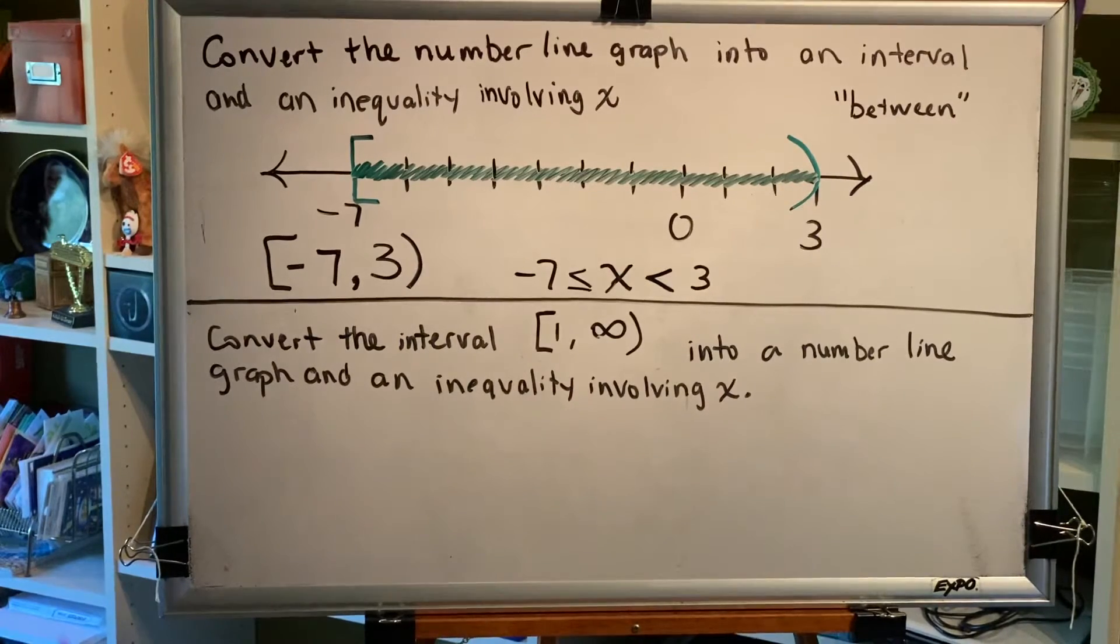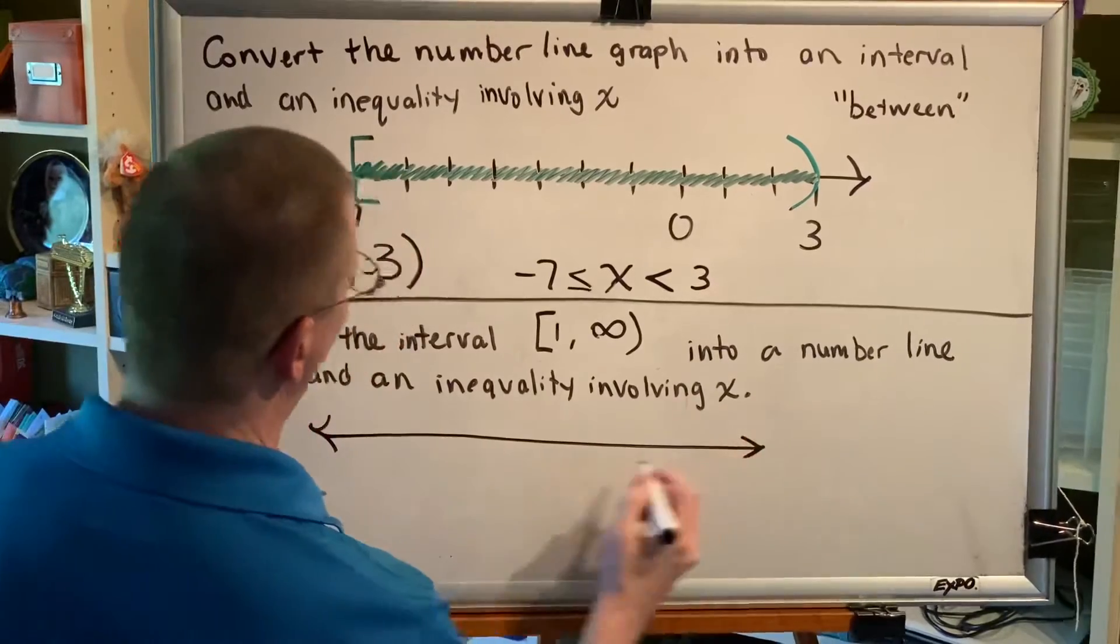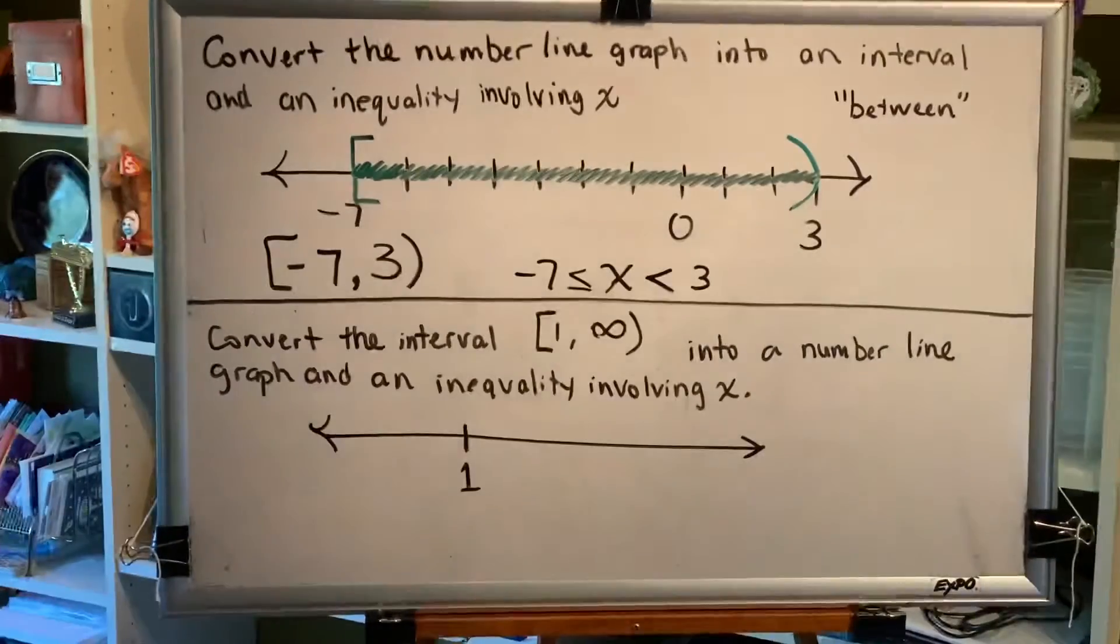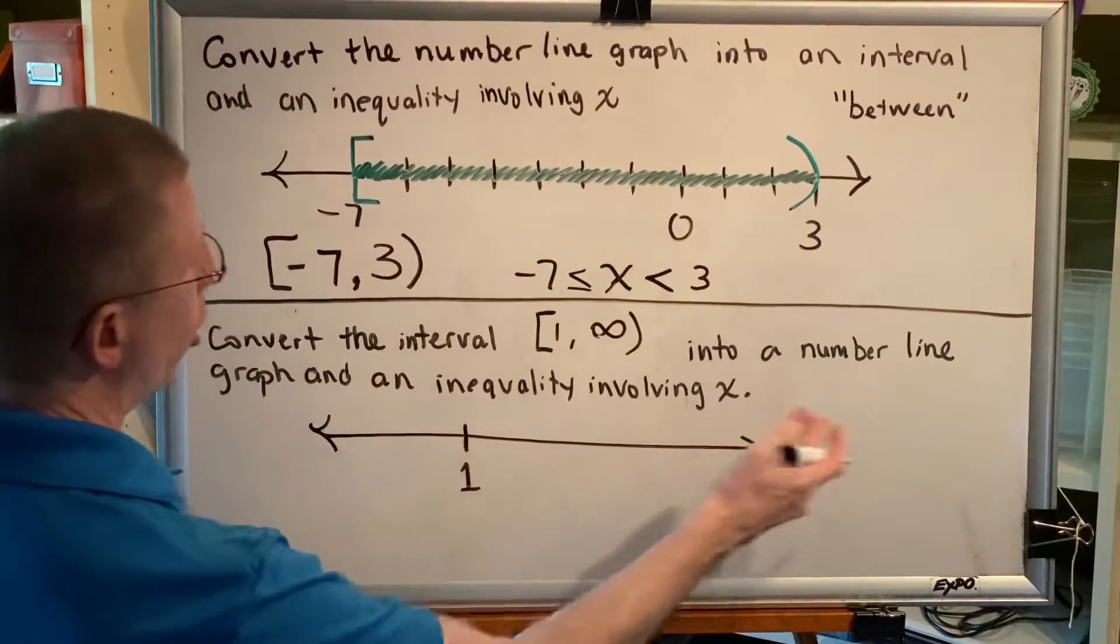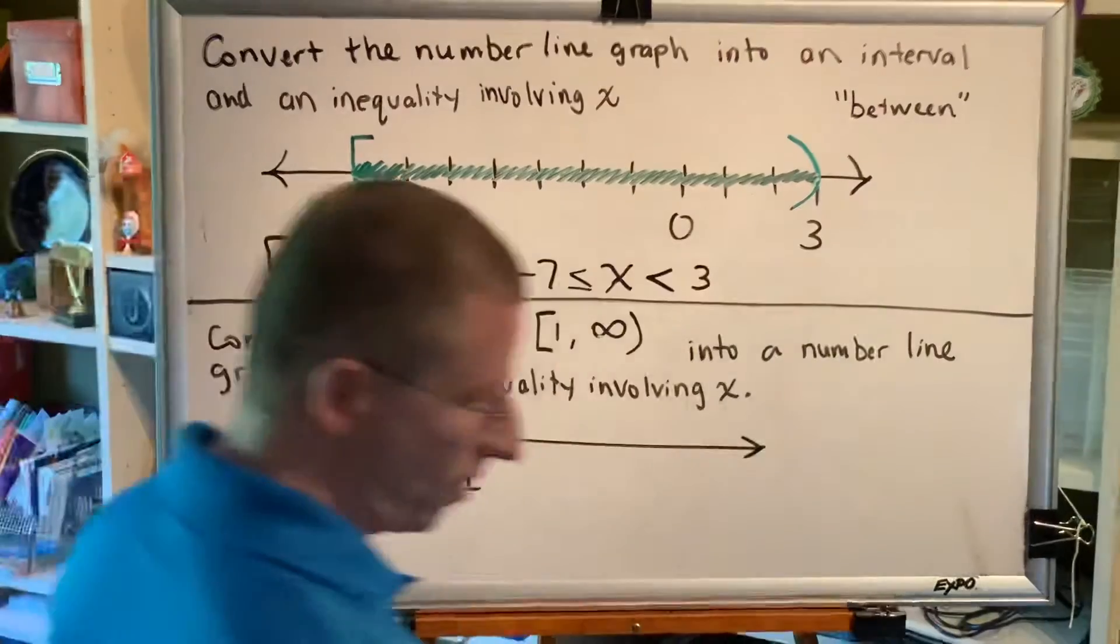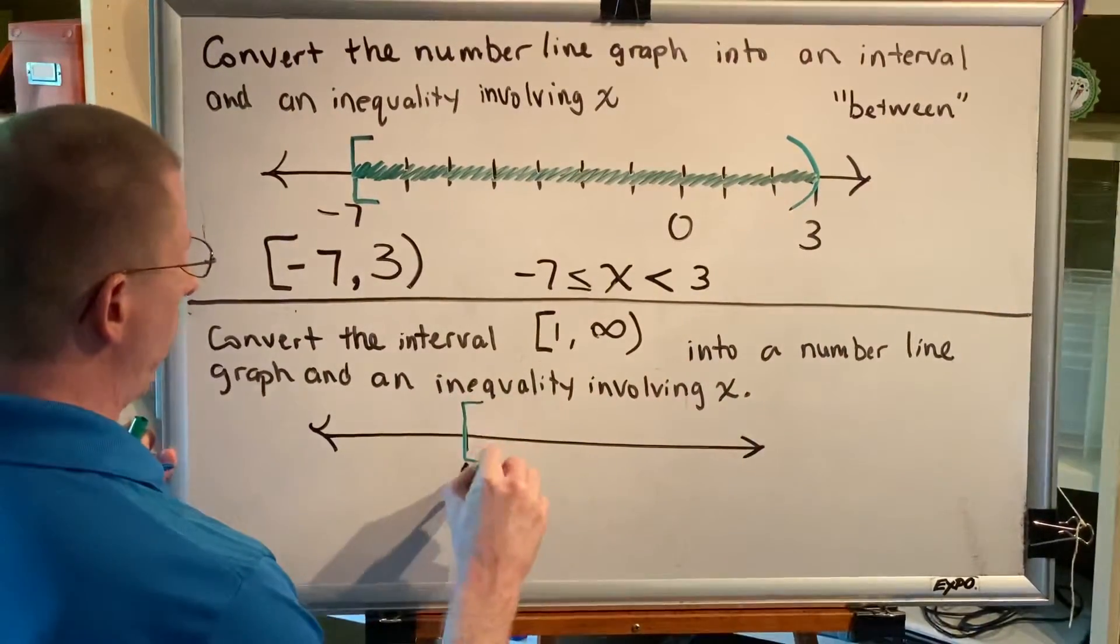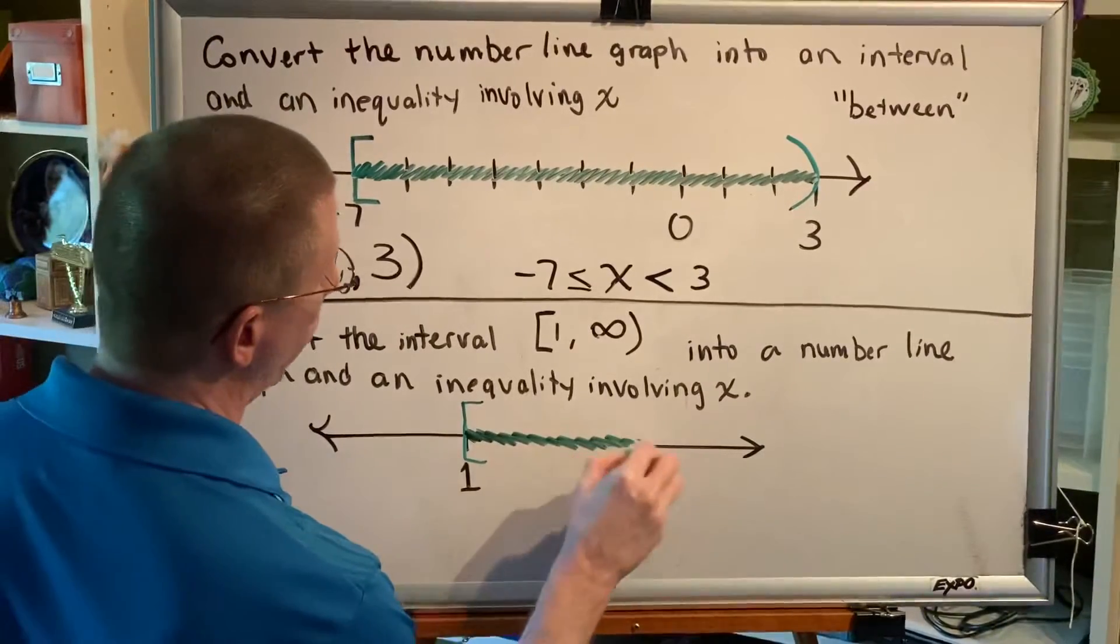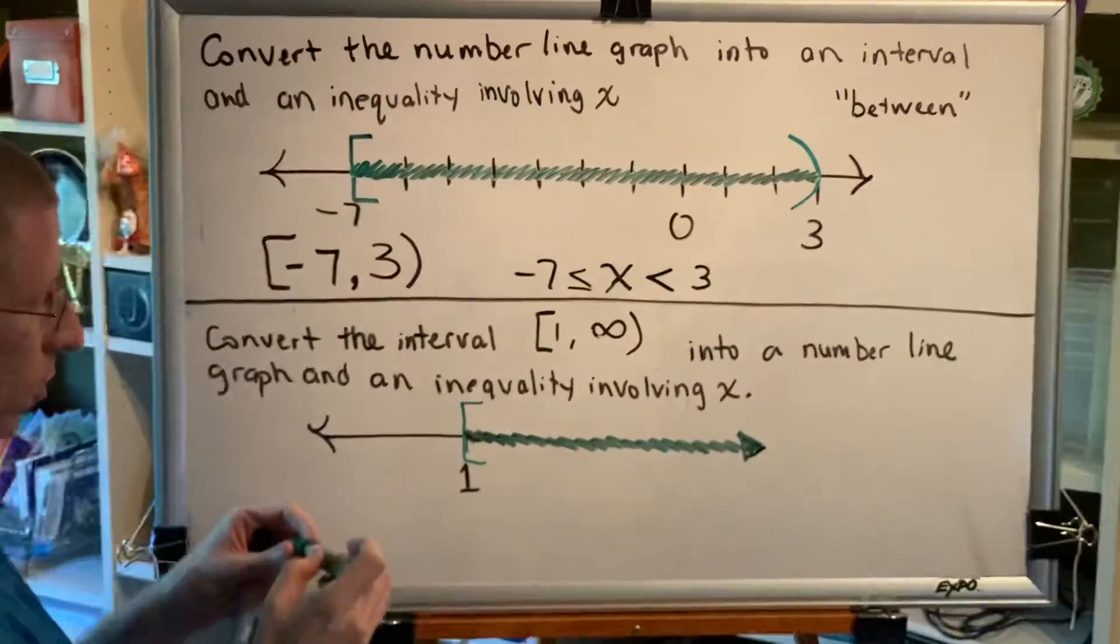So let's go ahead and start with the number line. We know that an interval tells us the smallest number first, and then the largest number last. So that means that our shading starts at the smallest number, one, and goes forever to the right to our largest number, positive infinity. We need a bracket at one. So, we make the bracket at one, we shade to the right, and we put our arrow to indicate that this goes forever.